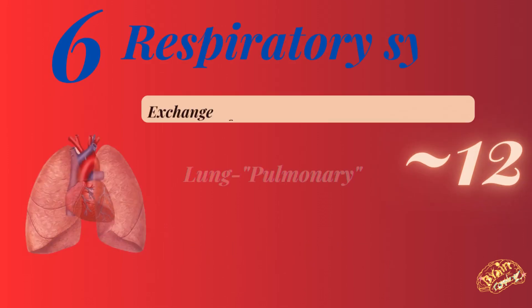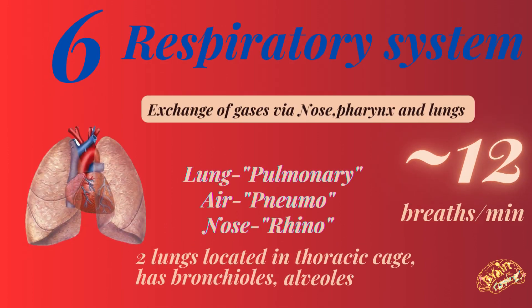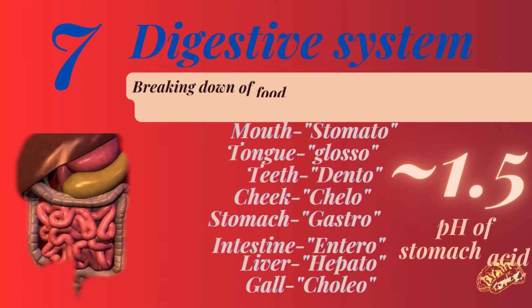Number six: the respiratory system. It includes exchange of gases via nose, pharynx, and lungs. Lung is denoted as 'pulmonary', air is 'pneumo', and nose is 'rhino'. We have two lungs located in the thoracic cage, which have bronchioles and alveoli. The normal respiratory rate is approximately 12 breaths per minute.